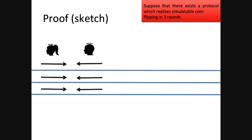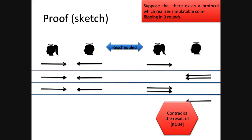Let me give you the sense of the proof. Suppose for contradiction that we do have such a 3-round protocol. What I'm going to do is reschedule this protocol to a 4-round protocol, which is not in the simultaneous message model. But Katz and Ostrowski proved it is impossible to have a 4-round protocol in the two-party setting — so this leads to a contradiction.